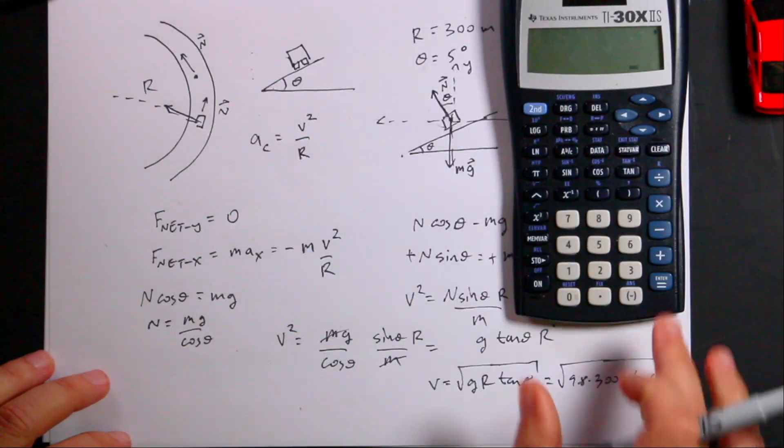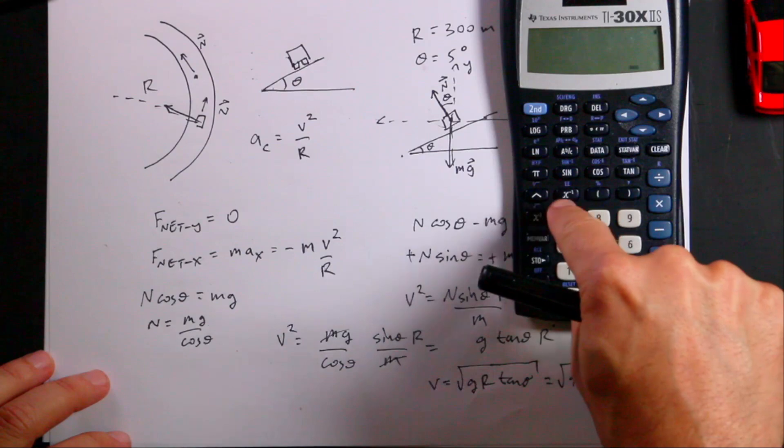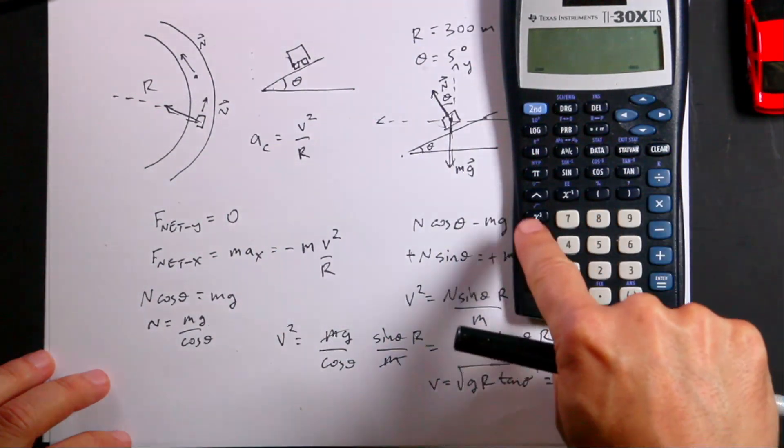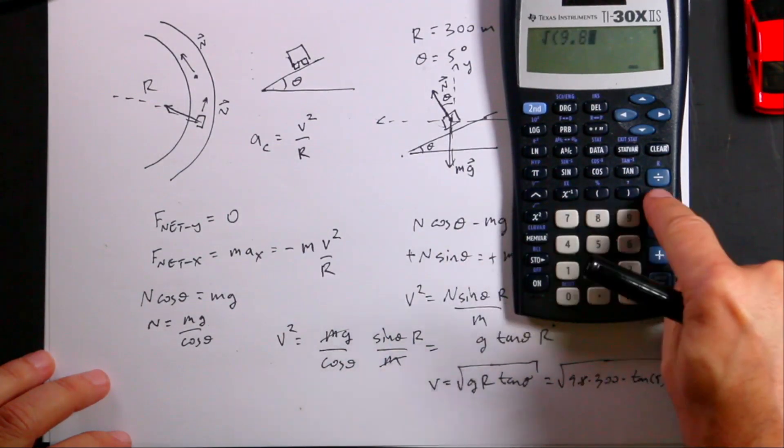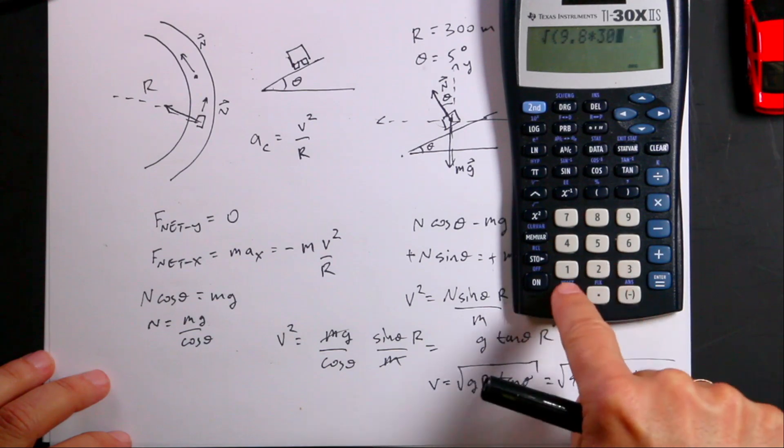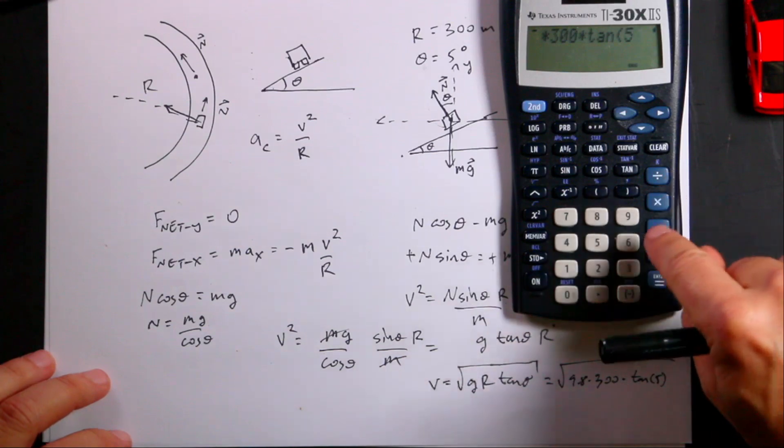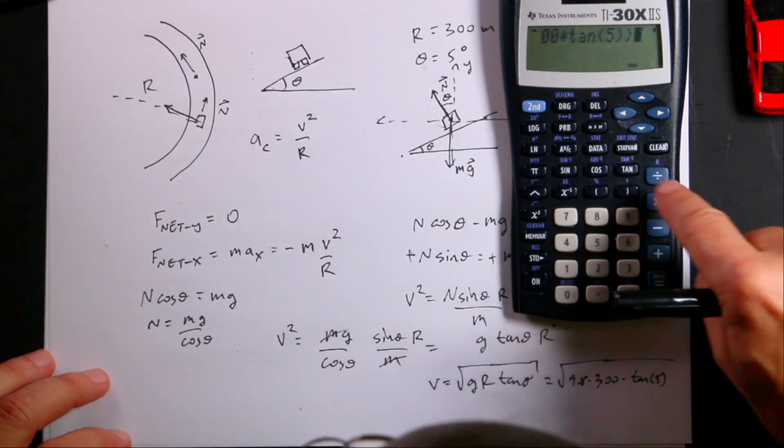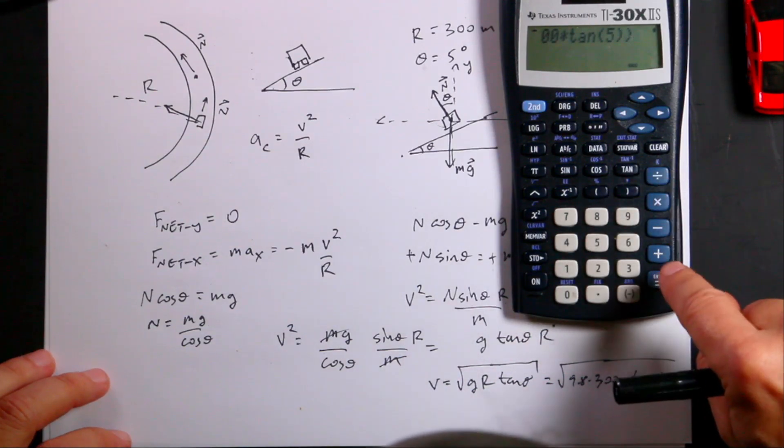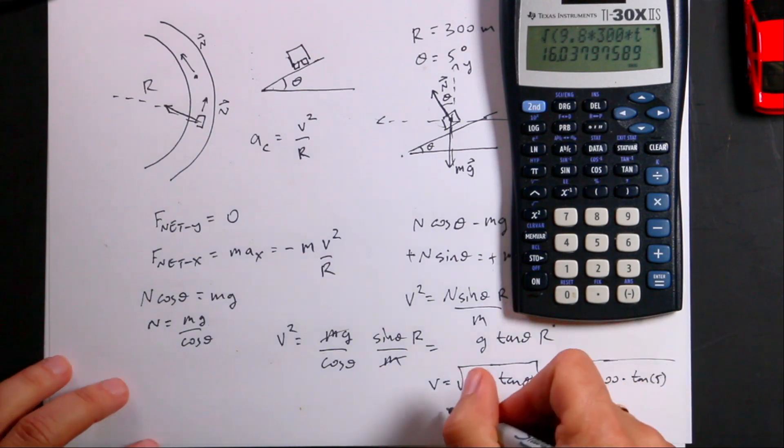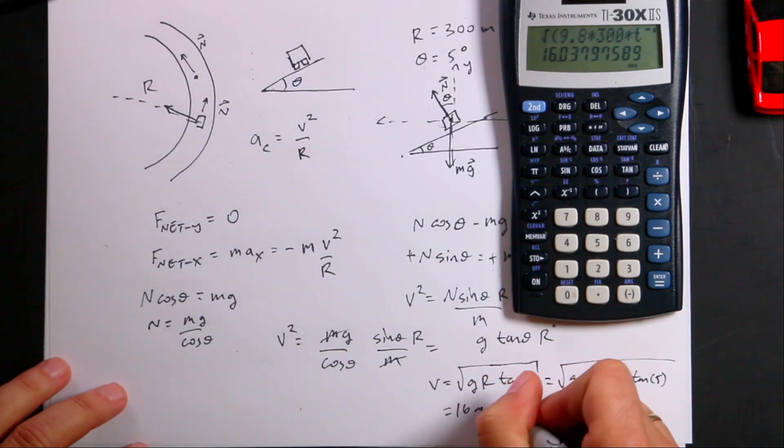So I'm going to say square root 9.8 times 300 times tangent 5, close parentheses, close parentheses. I think that will work. And I get 16 meters per second.